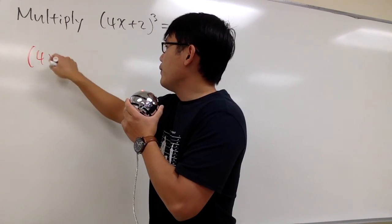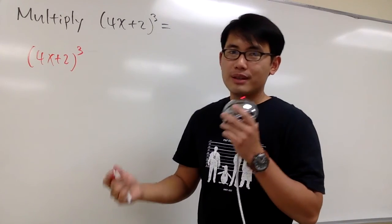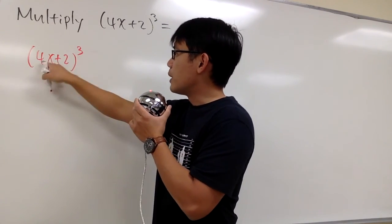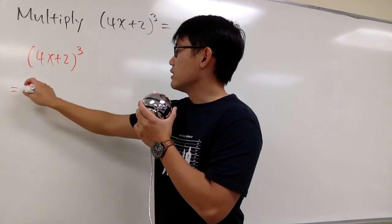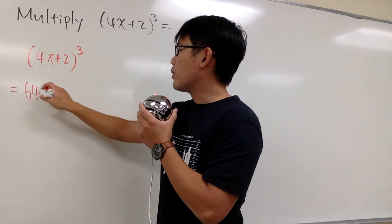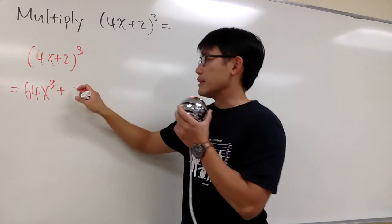If you look at 4x plus 2 to the third power, the common mistake is the following. People tend to just distribute the third power into the parentheses, and then just write down 4 to the third power, 64, x to the third power, plus 2 to the third power, that's 8.